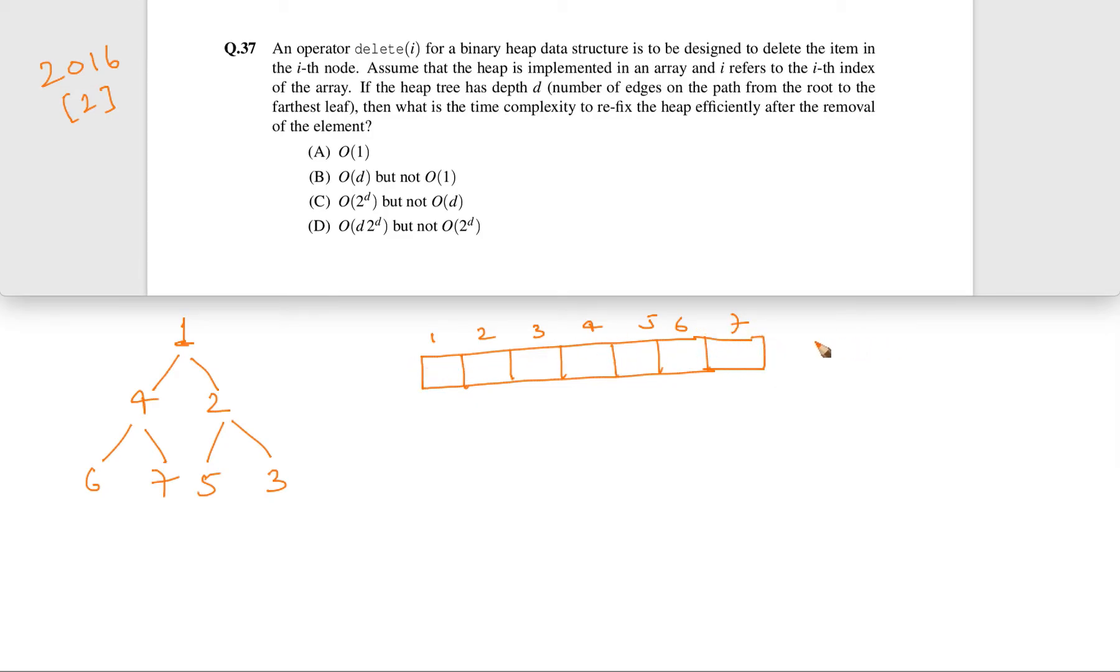Then the formula is the left child of any particular node will be placed at 2 times i, and for the right child, the place will be 2 times i plus 1. You might already be knowing this, just a brush up. So the first node will be put at root. So 1 will be here. Next, 4 will be placed at 1 times 2. And 2 will be placed at 2 times 1 plus 1. So 4 will be at index 2 and 2 will be at index 3.